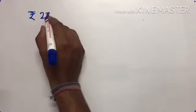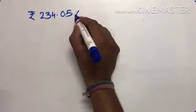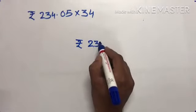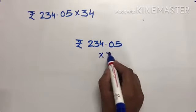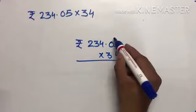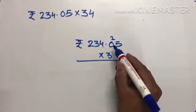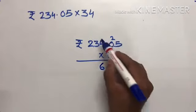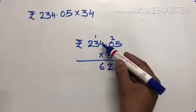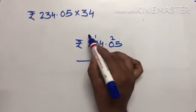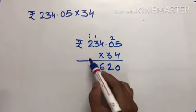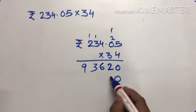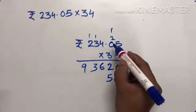Rupees 234.05 paise, we have to multiply it by 34. Rupees 234 and 5 paise, and we have to multiply it by 34. 4 times 5 is 20, 4 times 0 is 0 plus 2 is 2, 4 times 4 is 16, one carry, 3 times 4 is 12. Now multiply by 3: 3 times 5 is 15, 3 times 0 is 0, 3 times 4 is 12, 3 times 2 is 6.